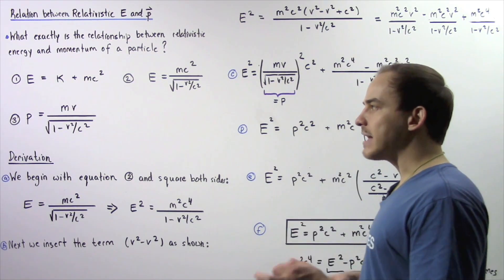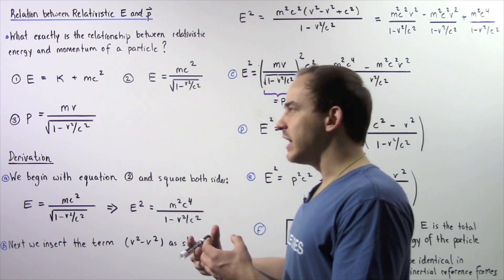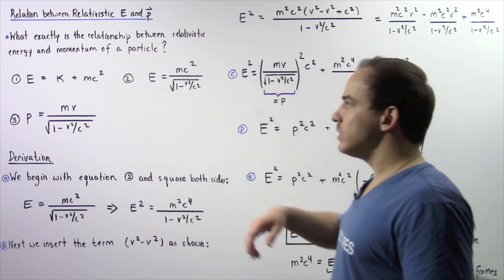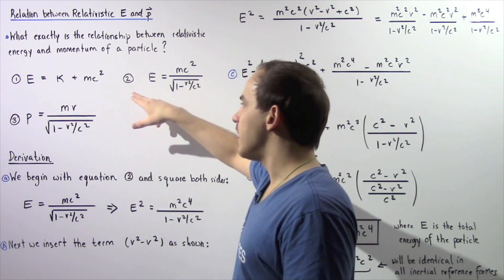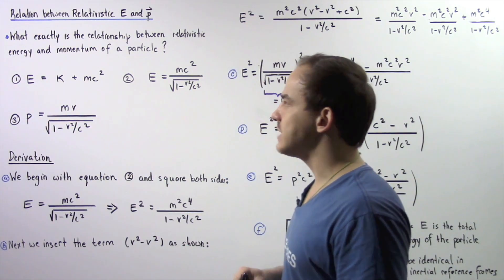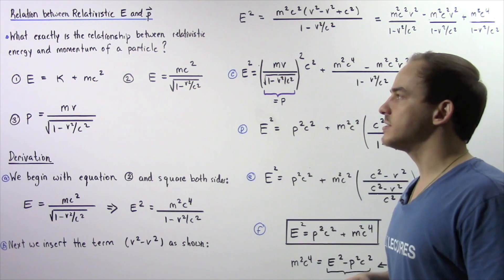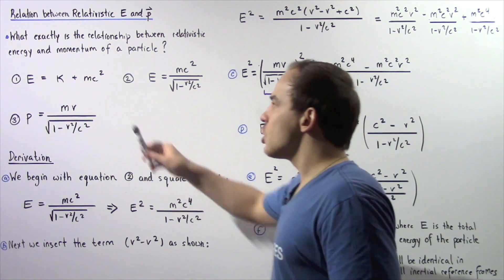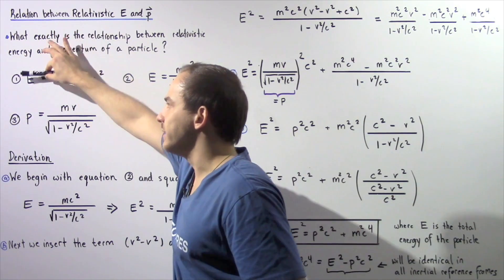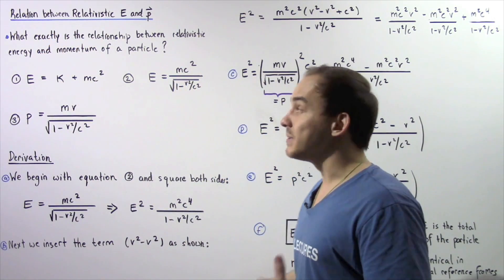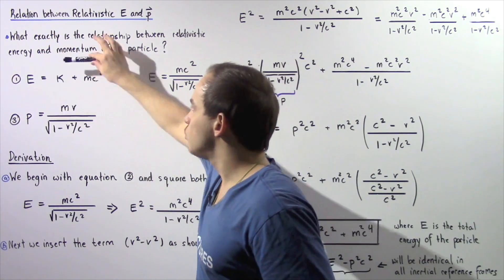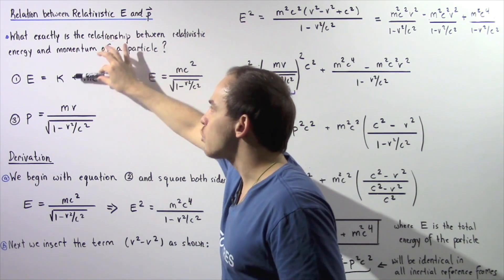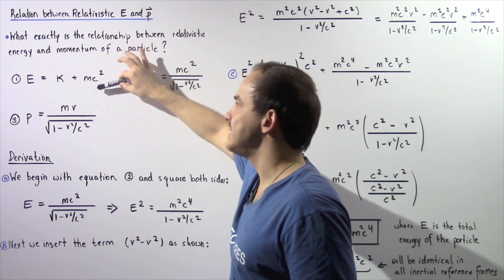We're going to derive an equation that relates the energy of our particle to the momentum. Let's begin by recalling three important equations we'll need. Equation one: the total energy of our particle E, not including potential energy, is equal to the kinetic energy of that particle plus the rest mass energy, mc squared.